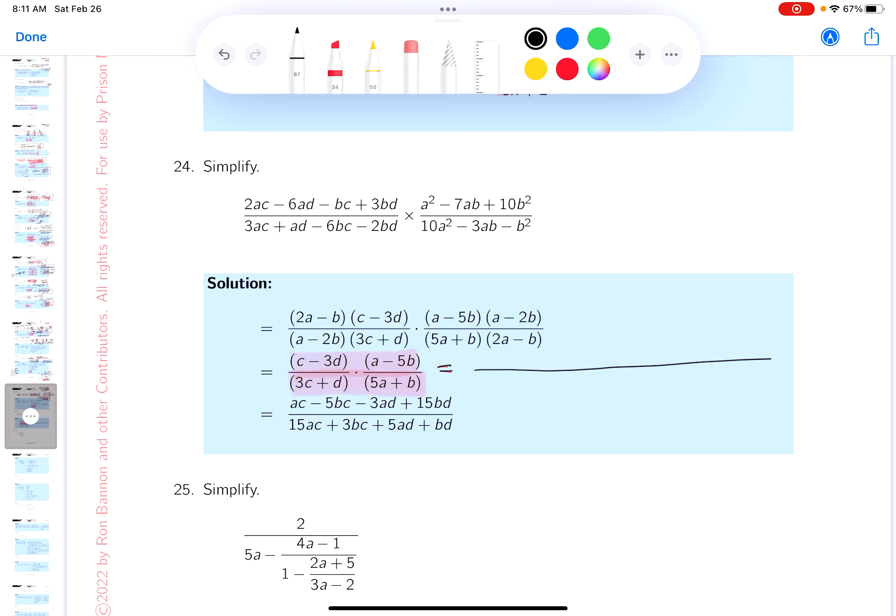What do you get? ac minus 5bc minus 3ad plus 15db, or bd whatever. Let's go to the bottom. You get...